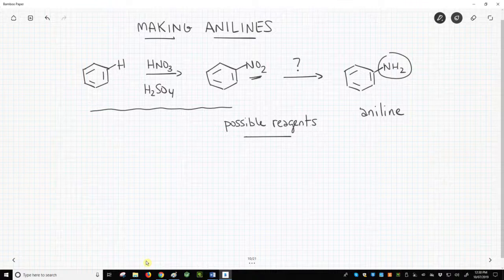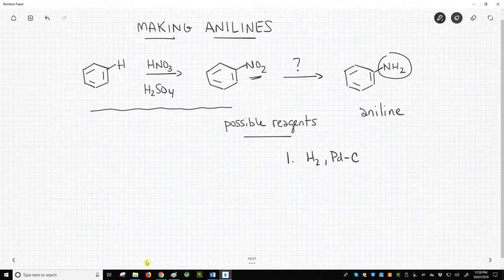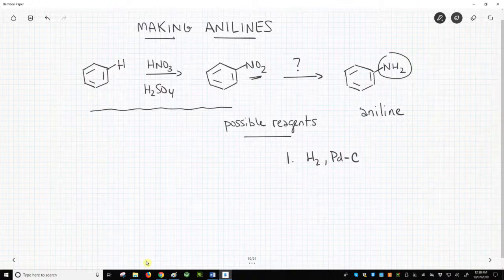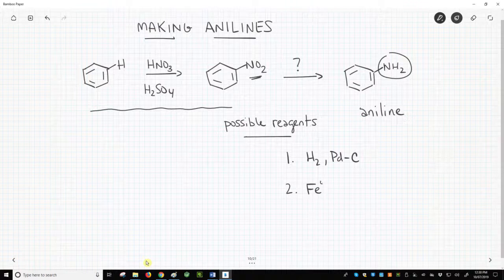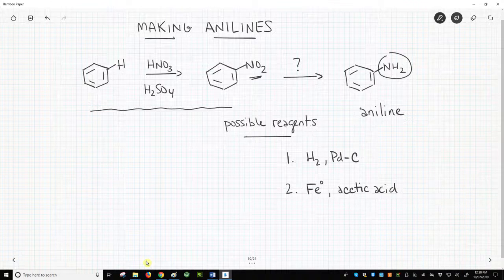This transformation is very common, and there are very many reagents that can reduce an NO2 group into an NH2 group. Two of the most popular are hydrogen and palladium on carbon, and iron metal Fe0 in acetic acid. Both give high yields of the aniline product.